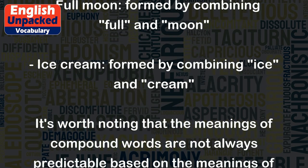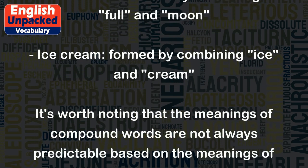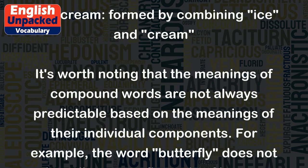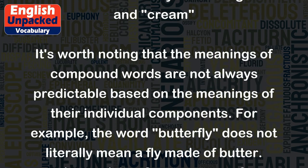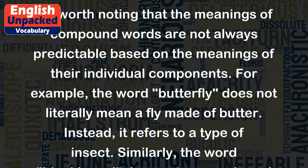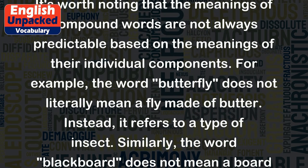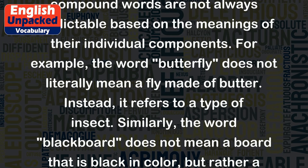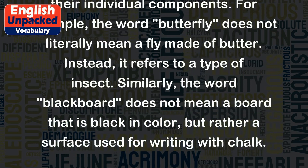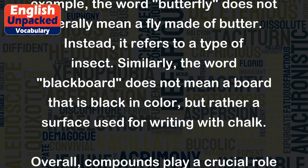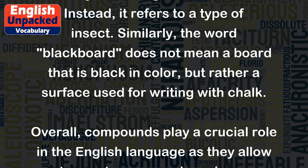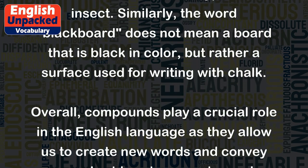It's worth noting that the meanings of compound words are not always predictable based on the meanings of their individual components. For example, the word butterfly does not literally mean a fly made of butter — instead, it refers to a type of insect. Similarly, the word blackboard does not mean a board that is black in color, but rather a surface used for writing with chalk.